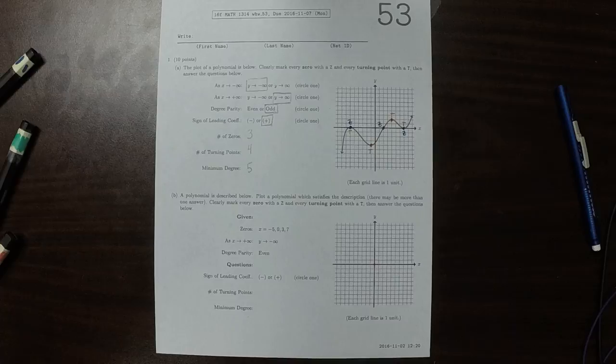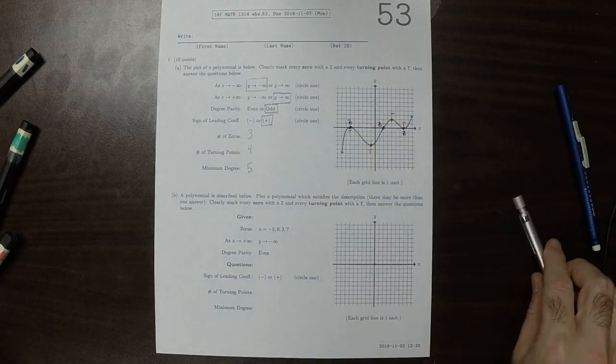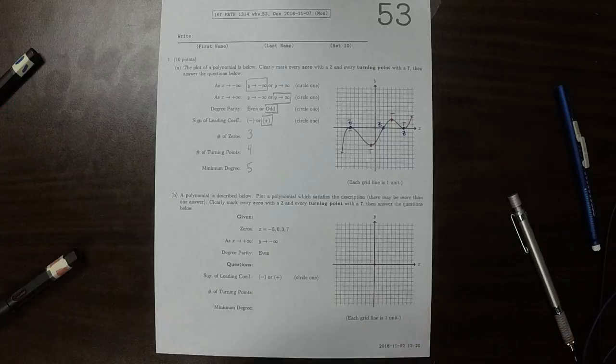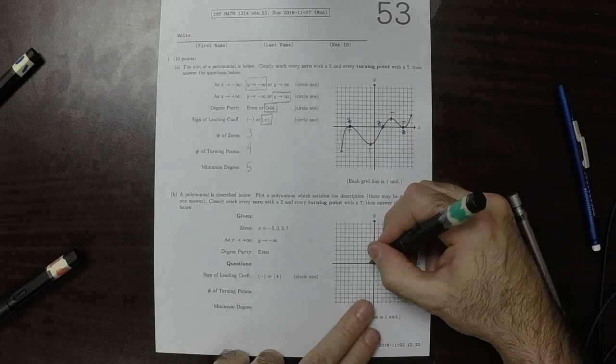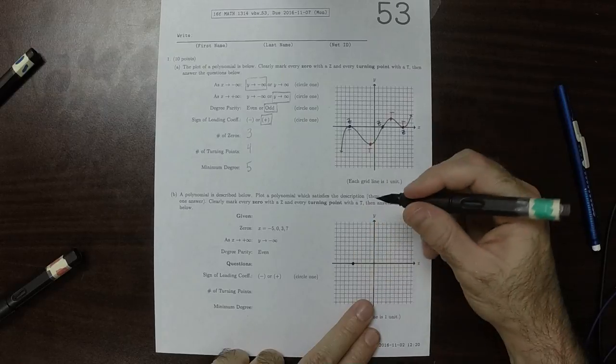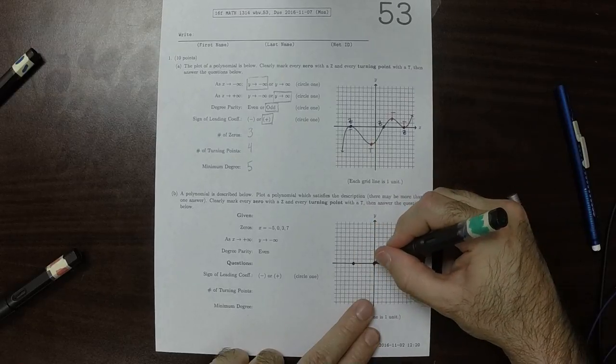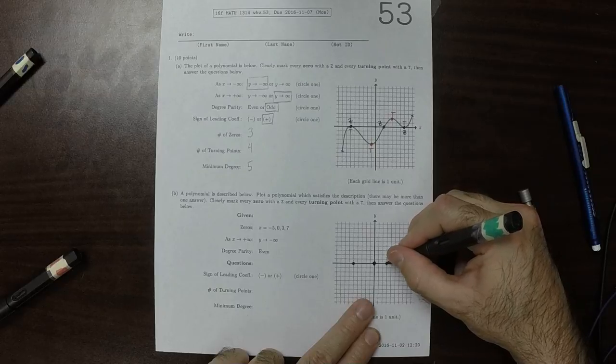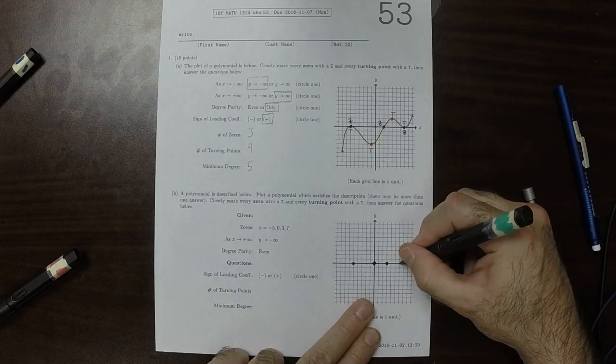Plot a polynomial which satisfies the description. It has zeros at negative five, so one, two, three, four, five, and also at zero, and also at three, and also at seven.